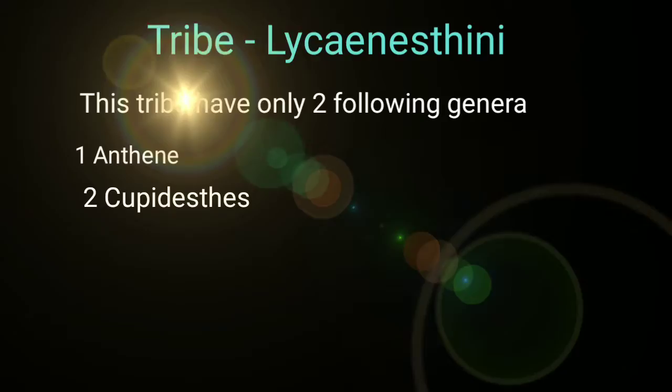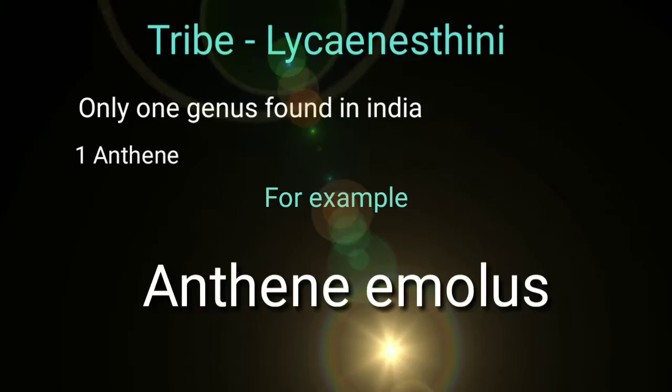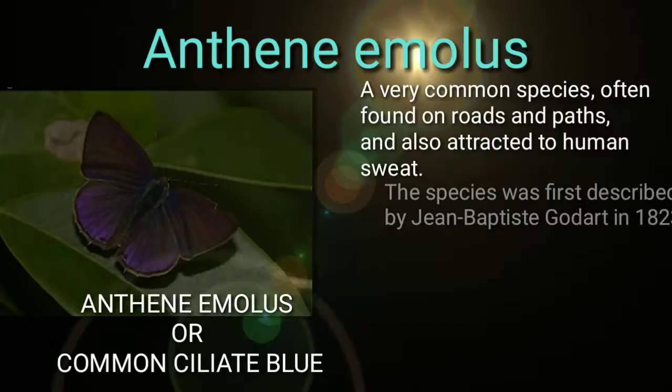This tribe has only two genera. Only one genus is found in India: Genus Anthene. For example, Anthene Amolus.